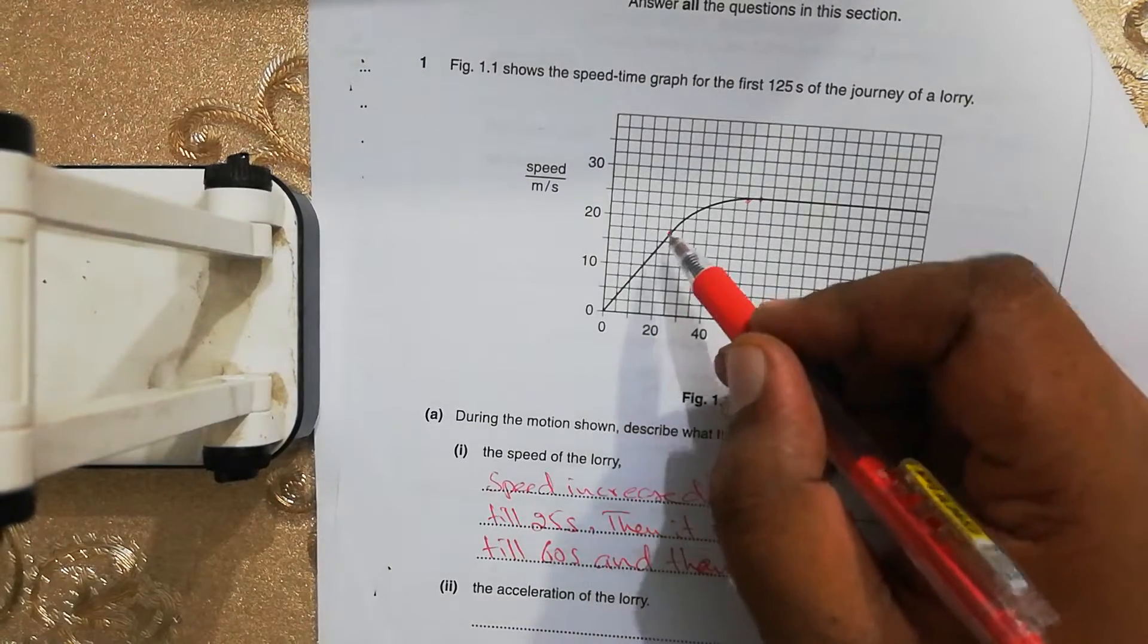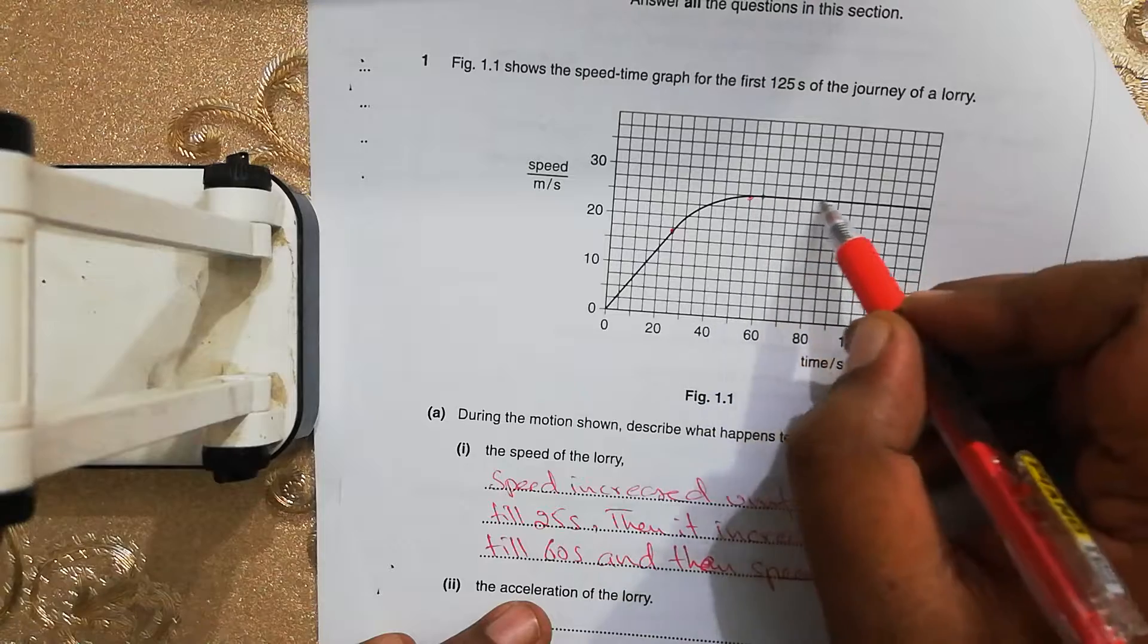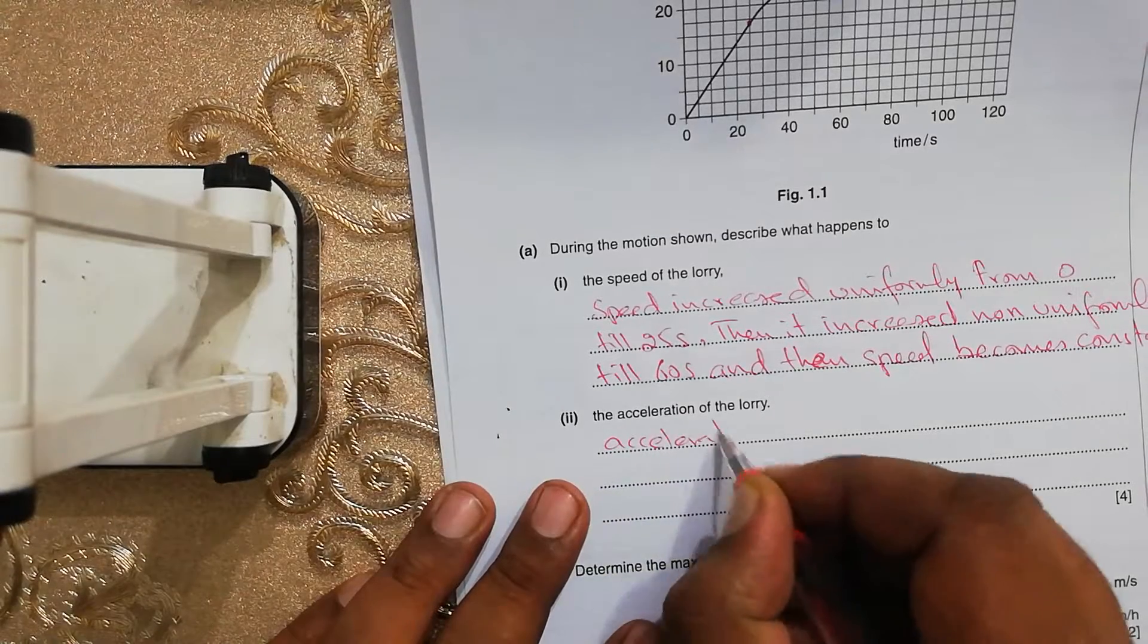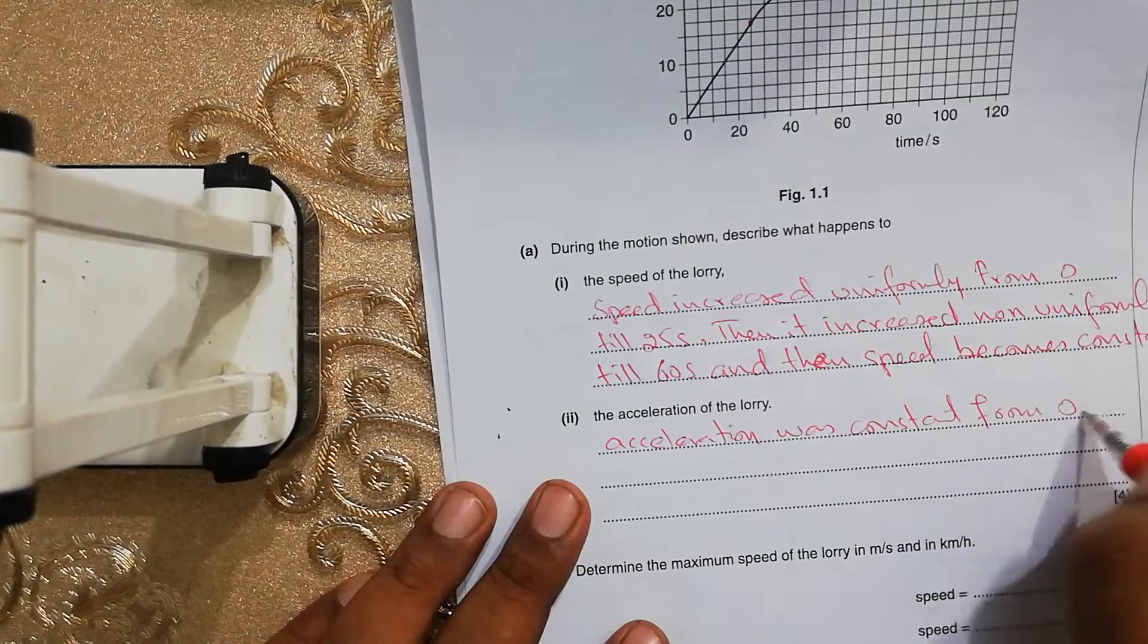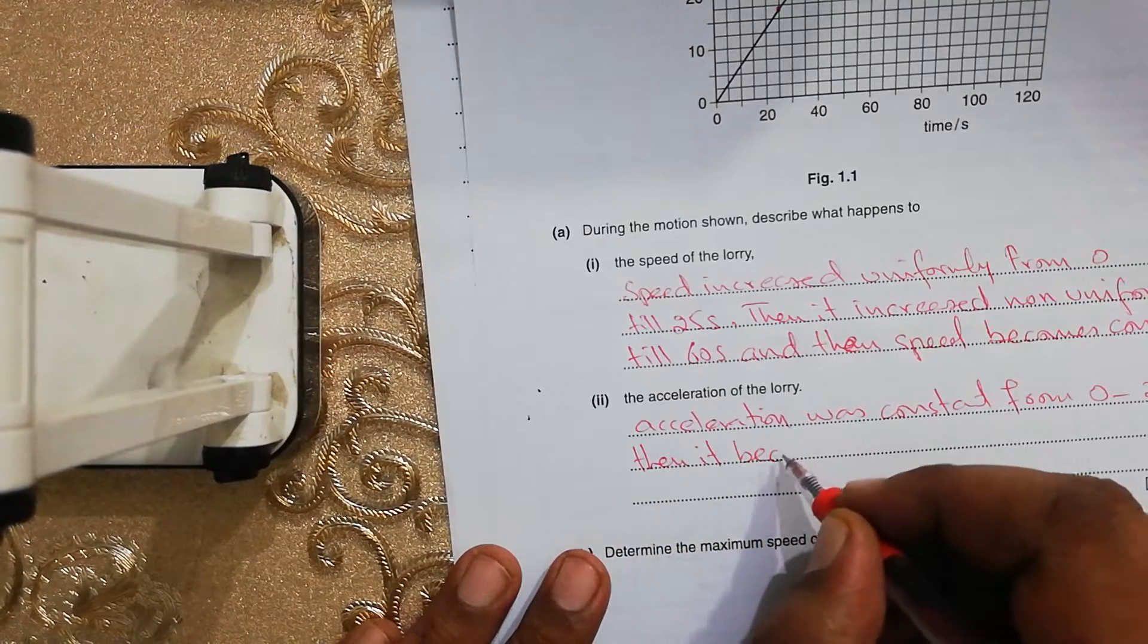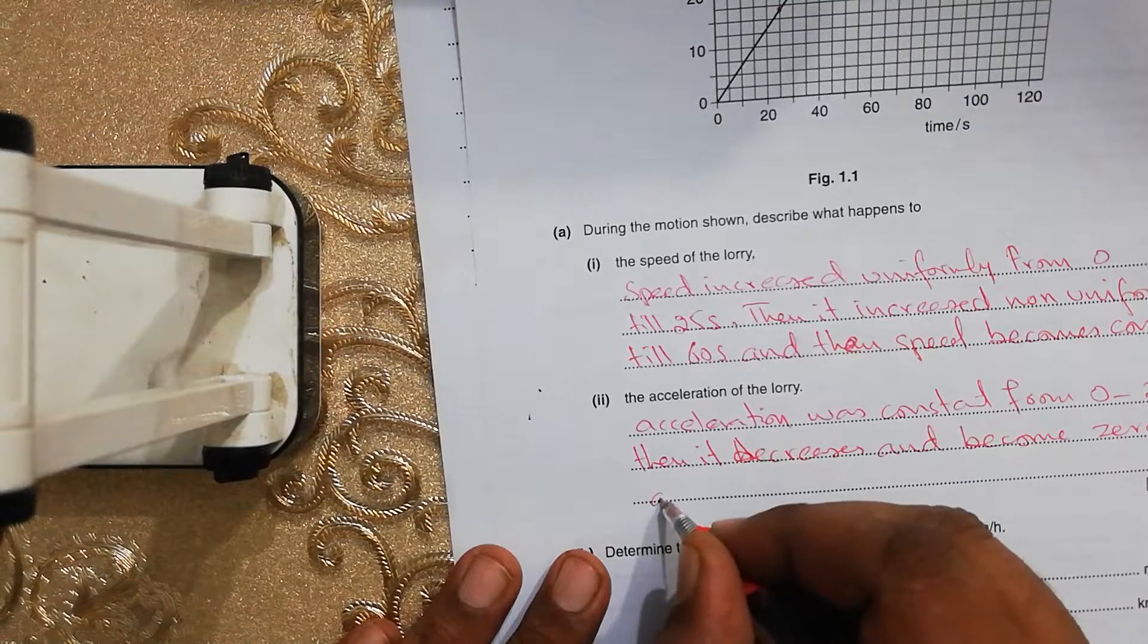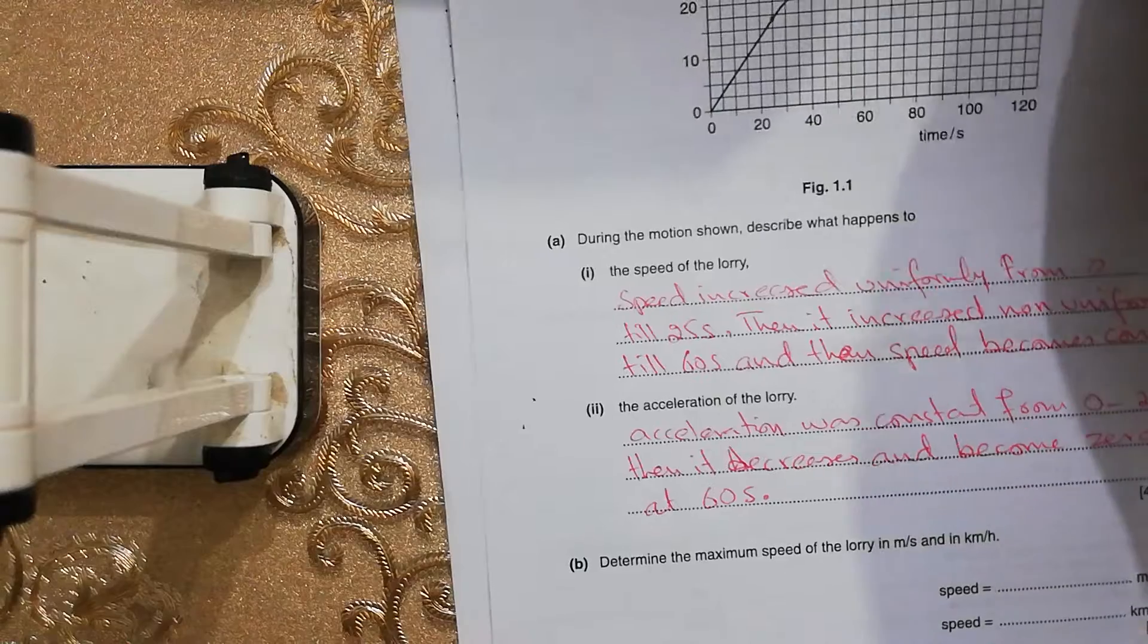So during this portion the acceleration is constant. Here we have non-uniform acceleration. And in this portion the acceleration is 0. So the question is what happens to the acceleration of the lorry. The acceleration was constant from 0 to 25 seconds, then it decreases and becomes 0 at 60 seconds. So this is what happens with the acceleration of the lorry.